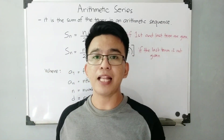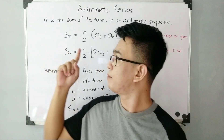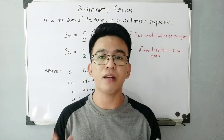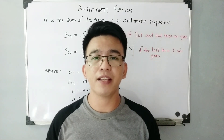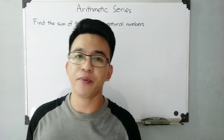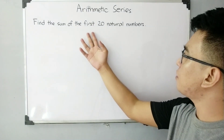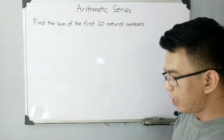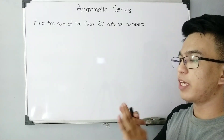The first example uses the formula where the first and last term are given; the second uses the formula where the last term is not given. Now let's have the first problem: find the sum of the first 20 natural numbers. We know the natural numbers are 1, 2, 3, 4, 5, 6, 7, 8, and so on.